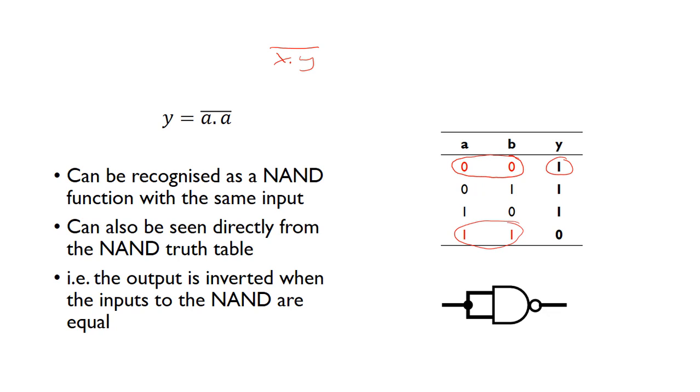So interpreting that as a circuit, we can see if we get a NAND gate and we join the inputs together, this is just going to be the same as a NOT gate. So a NAND gate with the inputs connected together is a NOT gate.